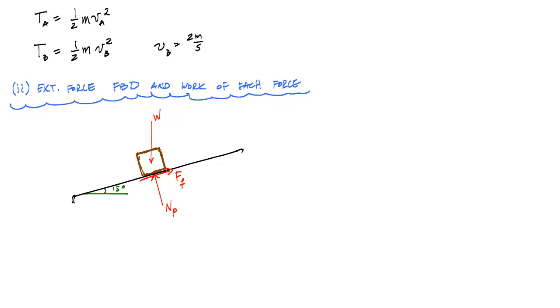The work of the weight: work is force times distance. The distance traveled in the direction of the force is the vertical distance. If this is point A and here is point B, and this distance is 5 meters, then the vertical distance is D sin(15°). So the work of the weight is W·D·sin(15°). It's positive because this force is in the same direction as the motion downward.